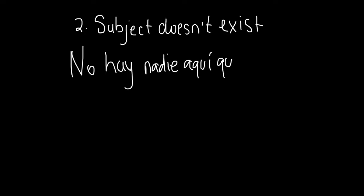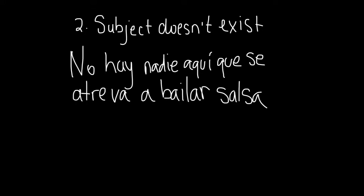The second instance when we use the adjective clauses and the subjunctive is when the subject doesn't exist. So for example, if I say, no hay nadie aquí que se atreva a bailar salsa, there's no one here who dares to dance salsa, then basically by saying there's no one here, the subject doesn't exist.